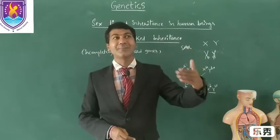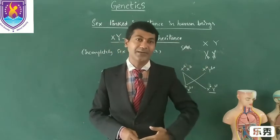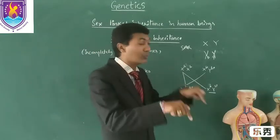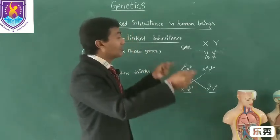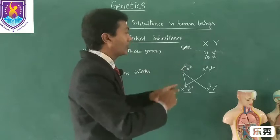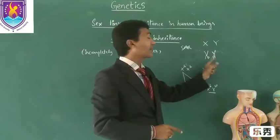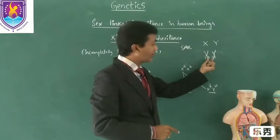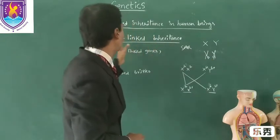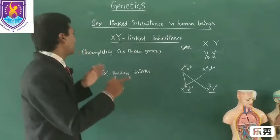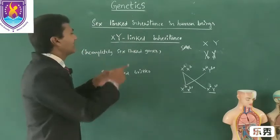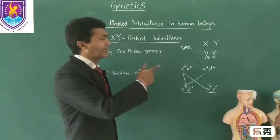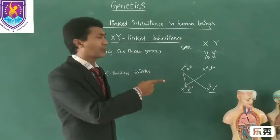Previously we studied only X-linked inheritance, where genes present only on the X chromosome are responsible. And Y-linked involves only Y chromosome genes. Here, two genes present on both non-homologous chromosomes X and Y, in the pseudo-autosomal regions, are both responsible for inheritance. These genes are generally called incompletely sex-linked genes.